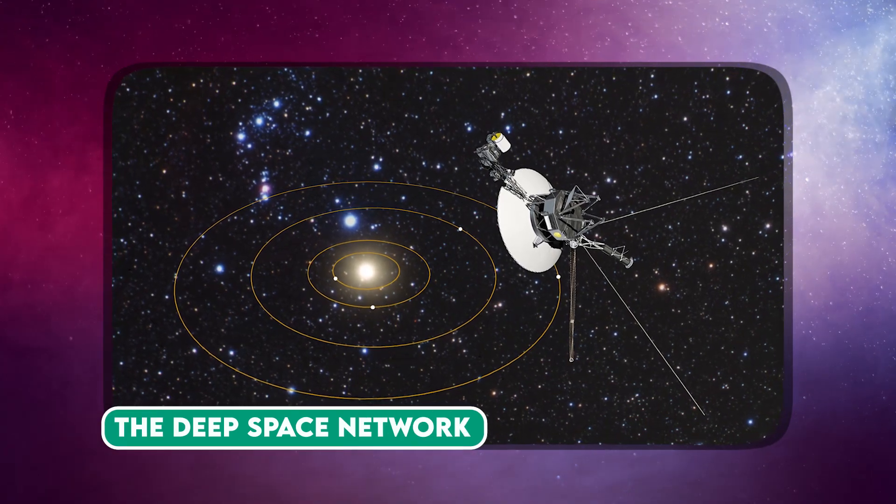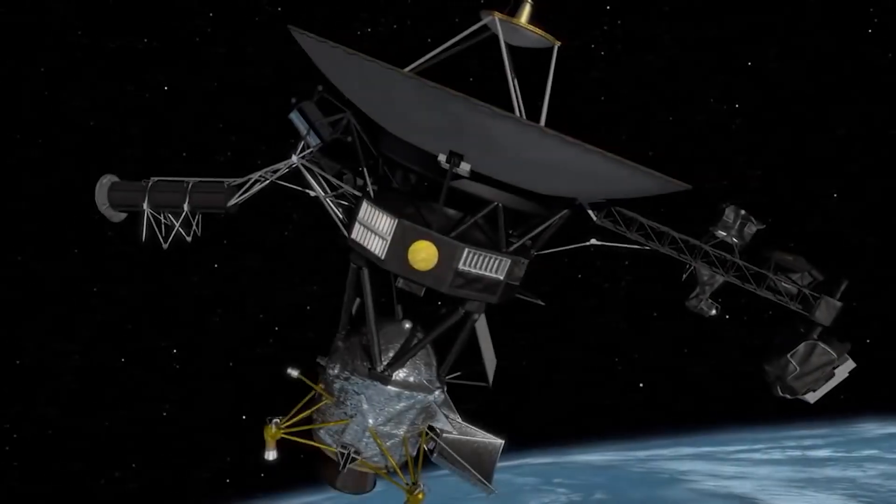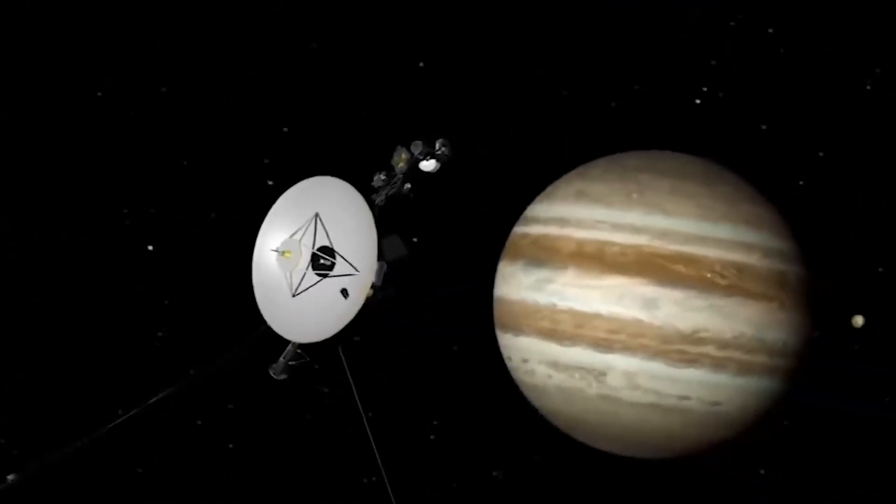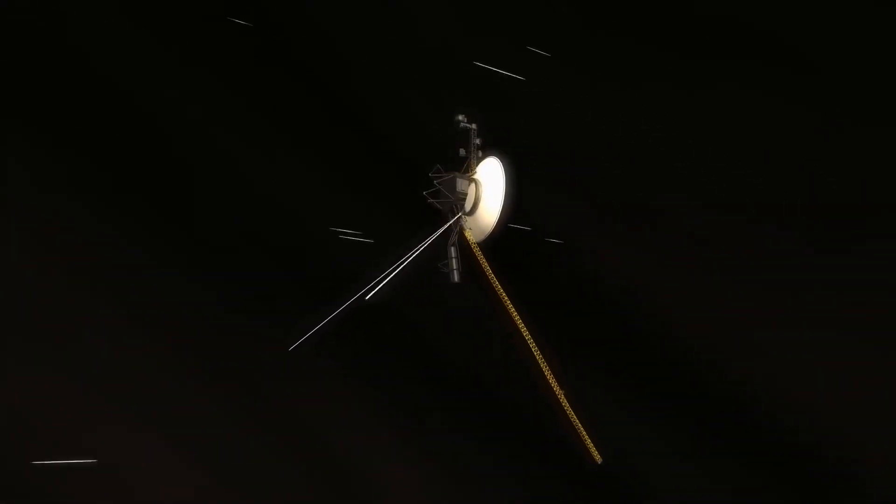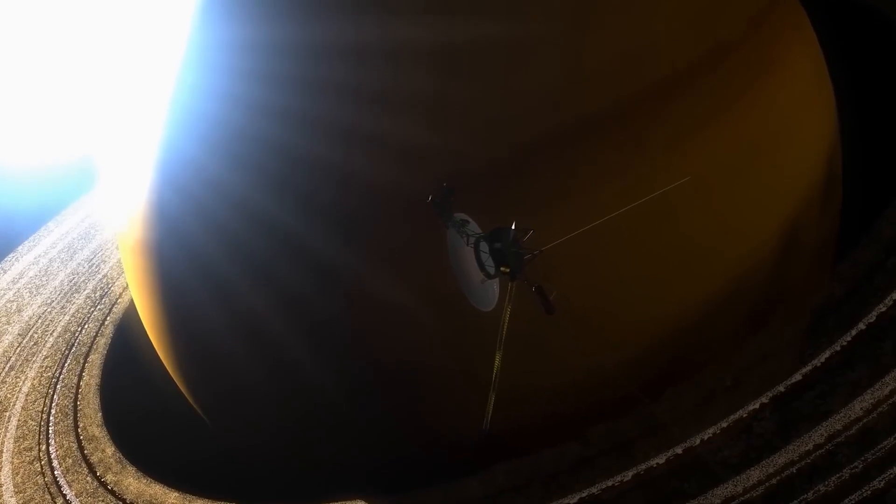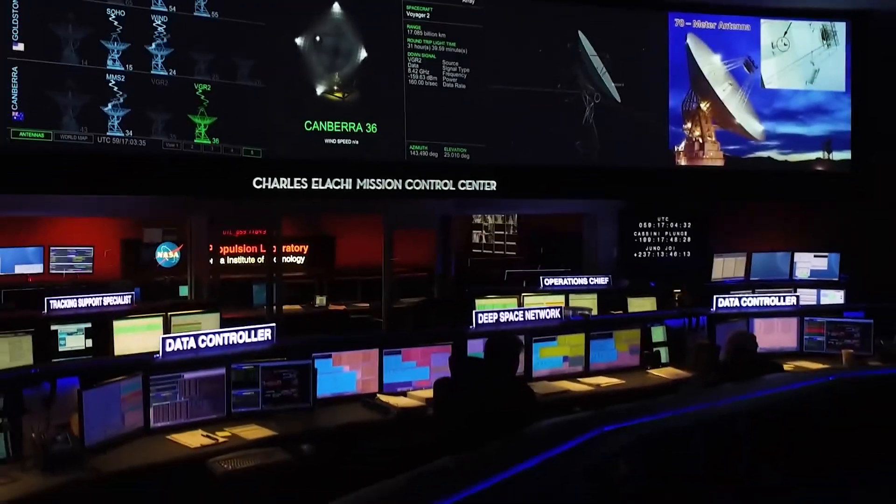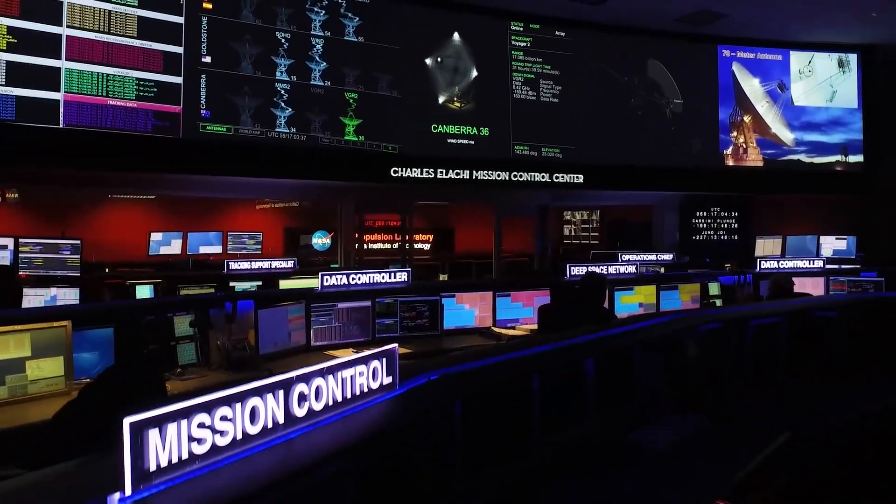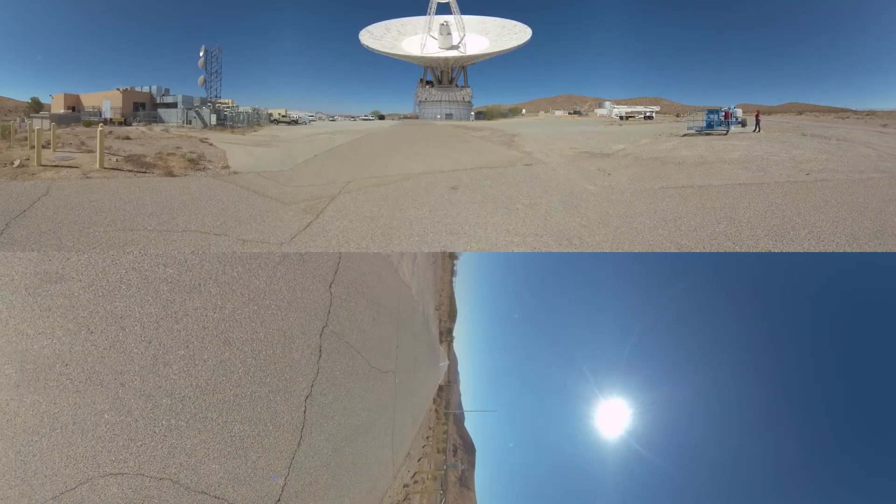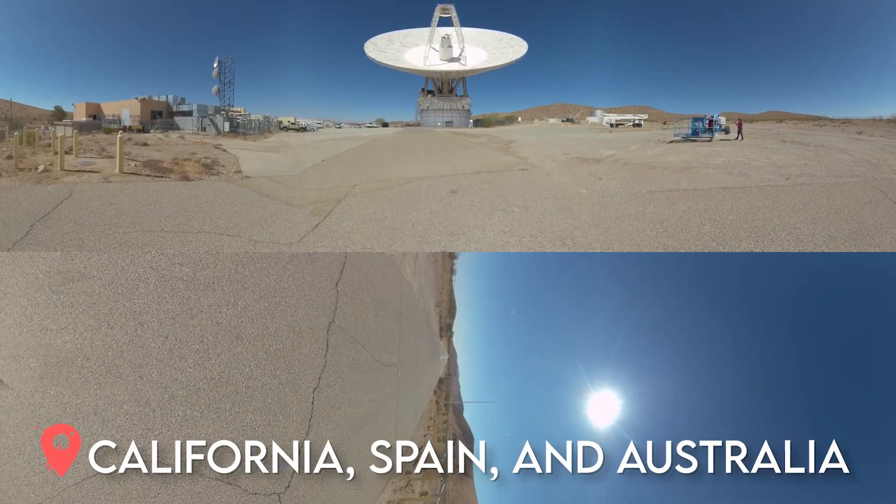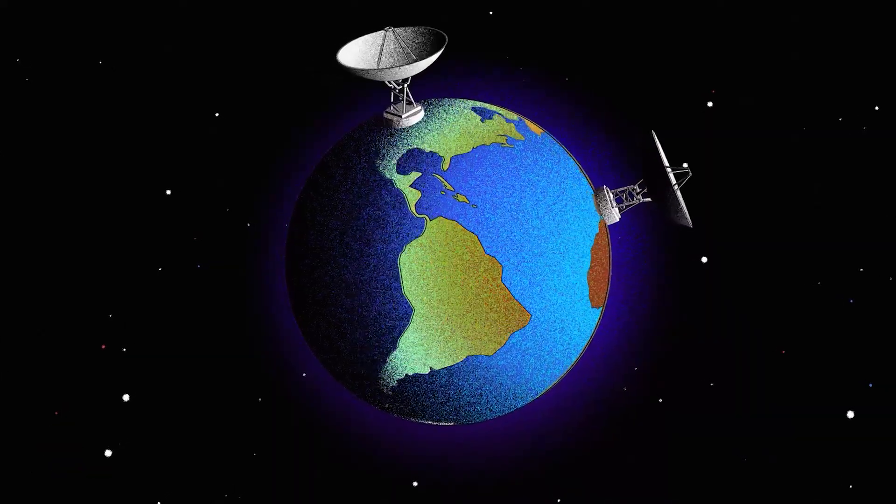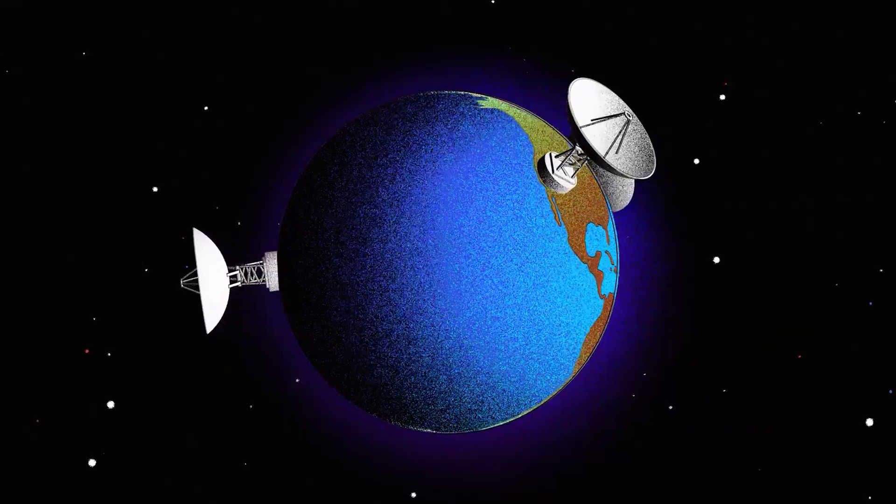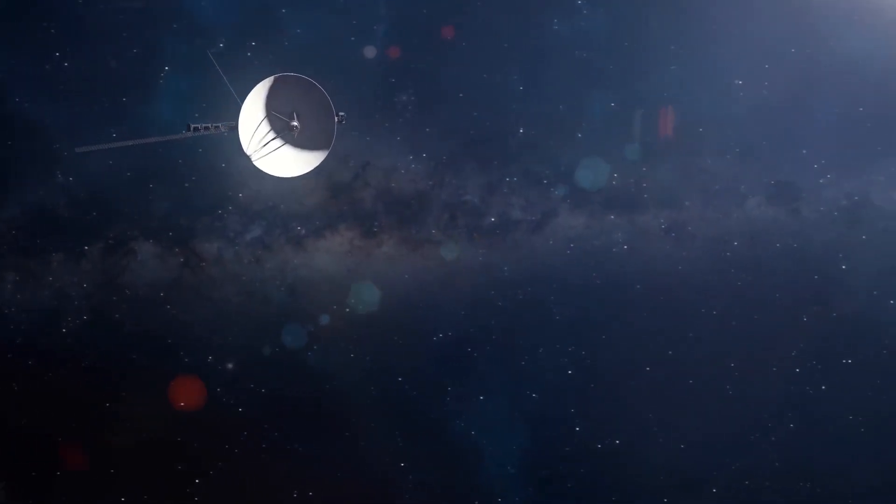Critical to the Voyager missions alongside gravity-assist maneuvers was the indispensable Deep Space Network, a celestial communication lifeline without which these missions would be mere fantasies. The DSN constitutes a global array of colossal radio antennas strategically positioned in locations like California, Spain, and Australia. Ranging from 26 to an impressive 70 meters in diameter, these cosmic megaphones facilitate communication with spacecraft voyaging beyond Earth.